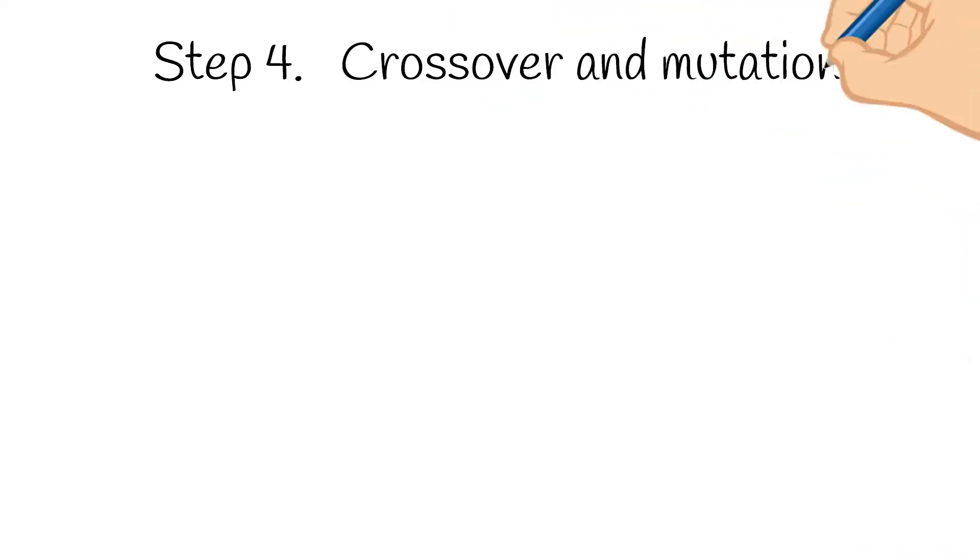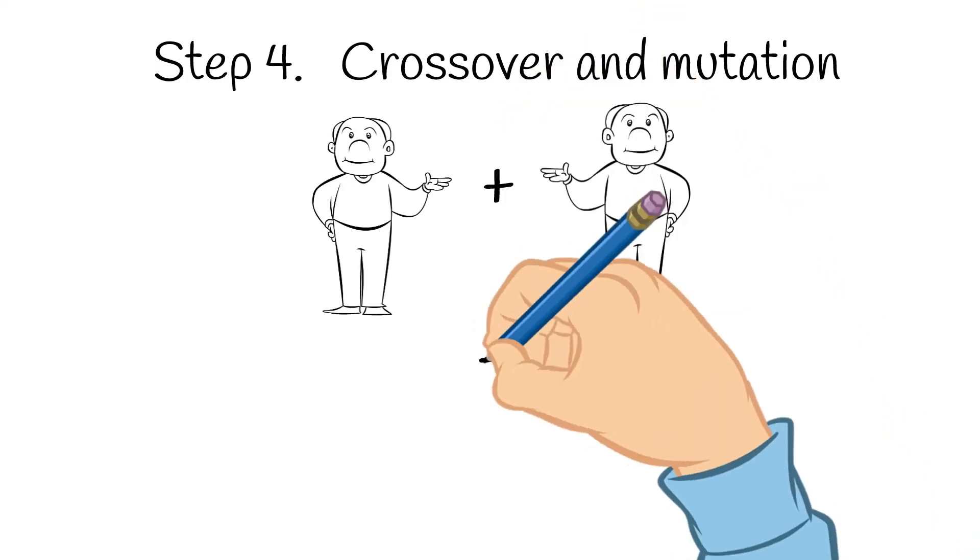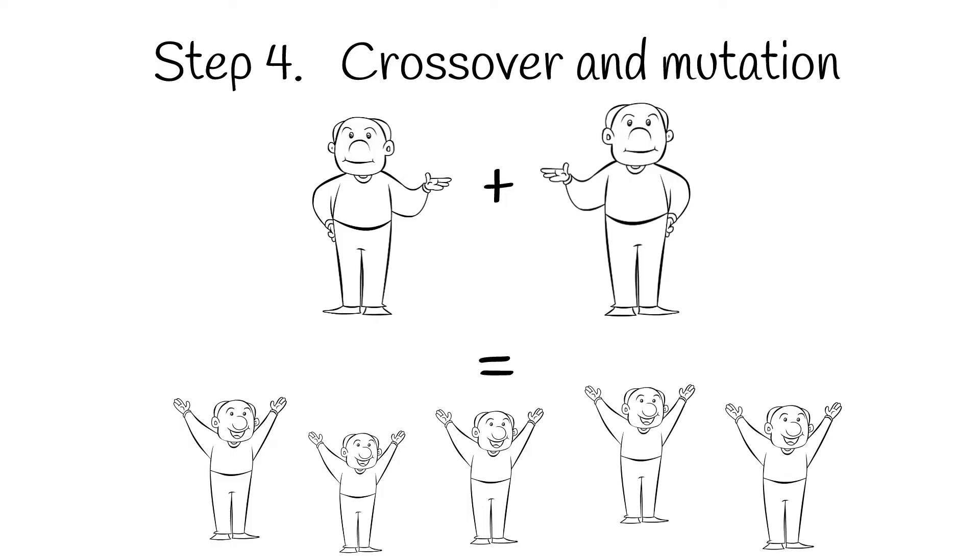Step four: crossover and mutation. In order to create better future Jonathans, we're going to take our fittest members and breed them to produce child Jonathans. So how do we do that?